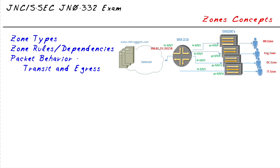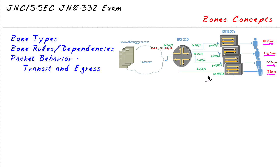Policies are actually going to control how traffic is handled between each of our zones. Looking at this diagram, I have an IT zone, a data center zone, an engineering zone, a human resources zone, and probably a few others in our corporation. I'd call this the internet zone out here. What we're going to do is set up the interfaces to belong to one zone or the other.